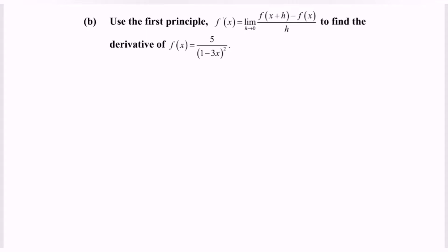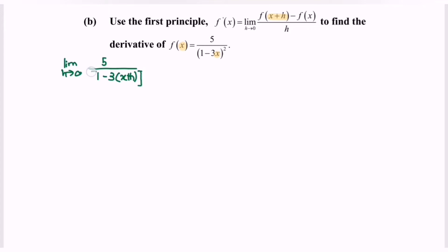In order to find the first derivative, I'm going to substitute into the formula for the first principle. So the limit when h approaching 0 for f(x+h) — meaning we substitute x plus h into the function. So we rewrite the situation where we have 5 over 1 minus 3 times (x plus h), bracket squared.